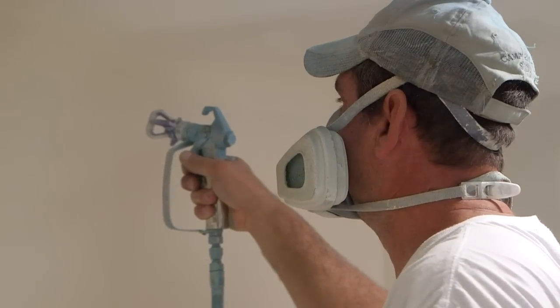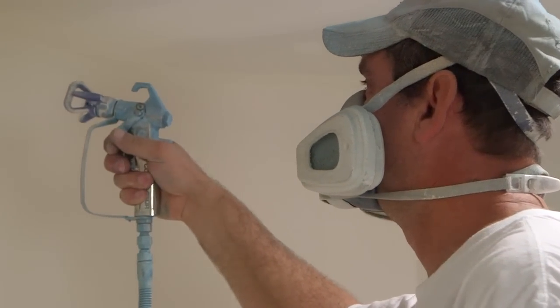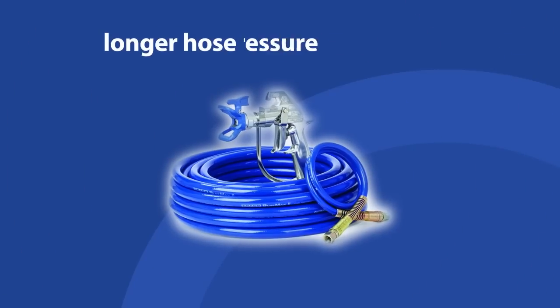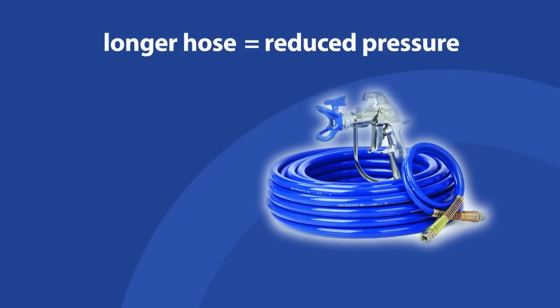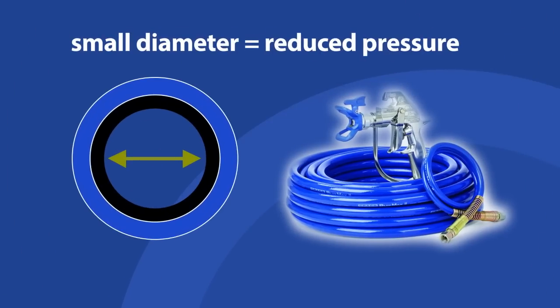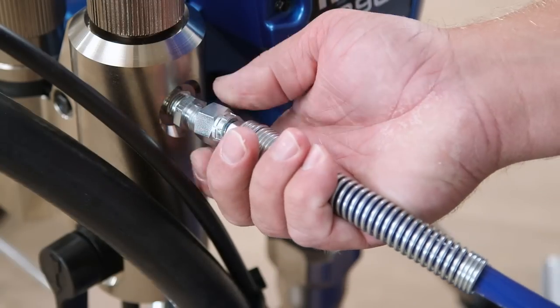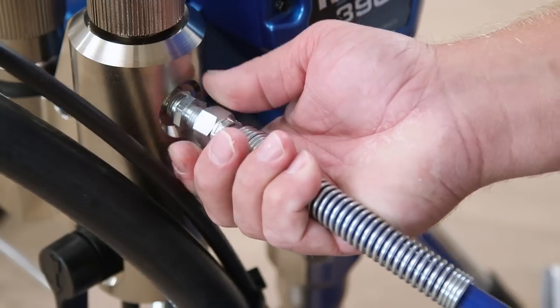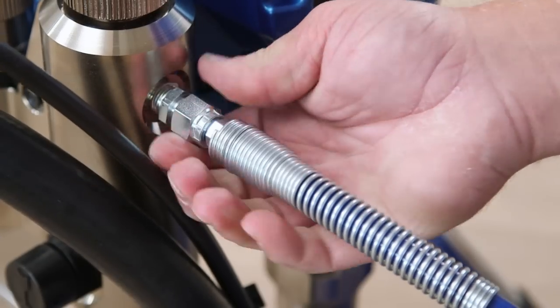Spray pressure is impacted by the length and diameter of the hose you use. A longer hose will result in a greater pressure drop. A smaller hose diameter will also reduce pressure at the tip. And if you're connecting two hoses together, always attach the larger diameter hose to the pump first to minimize pressure drop.